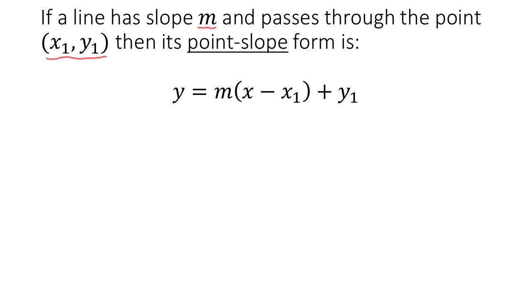In this case, m is our slope — that's a number. x1 is an x-coordinate — that's a number. And y1 is a y-coordinate — that's a number. The x and y are the variables of our equation, and those are going to stay as variables when we use the point-slope form.